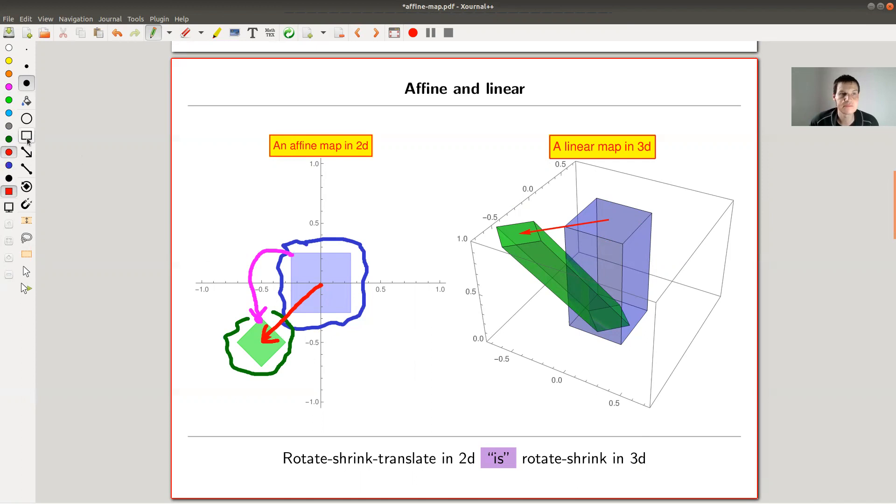But this rotate shrink translate operation is actually a rotate shrink operation in 3D and a shear. Right, it's a rotate shrink operation in some sense.